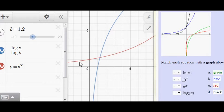So over here in red, the red graph is the graph of y equals b to the x and I'm going to vary the value of b.